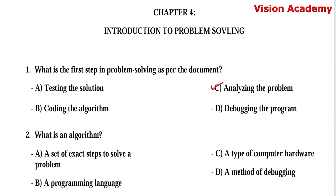Question number 2: What is an algorithm? Option A, a set of exact steps to solve a problem. Option B, a programming language. Option C, a type of computer hardware. Option D, a method of debugging. Here, option A, a set of exact steps to solve a problem, is the right answer.